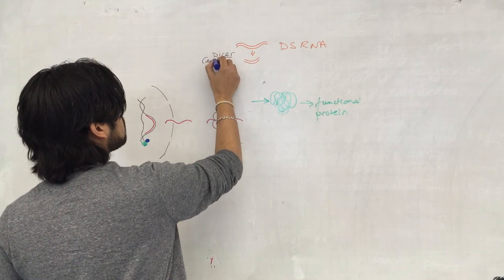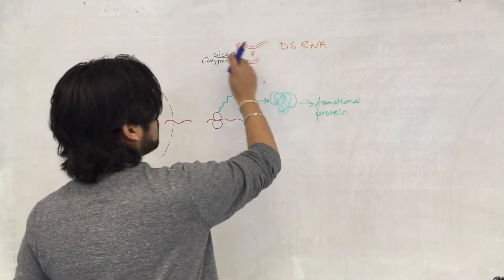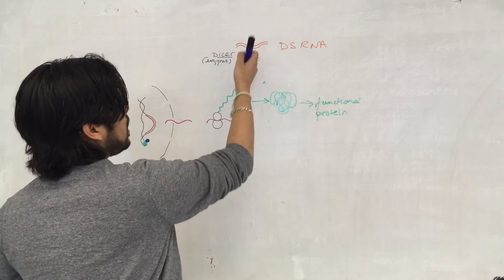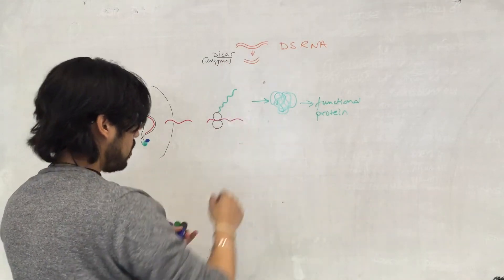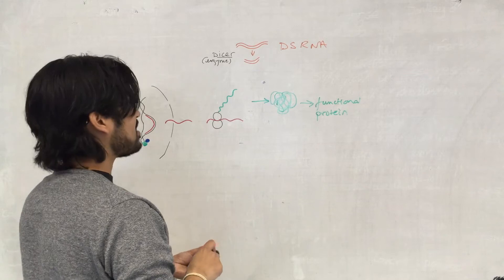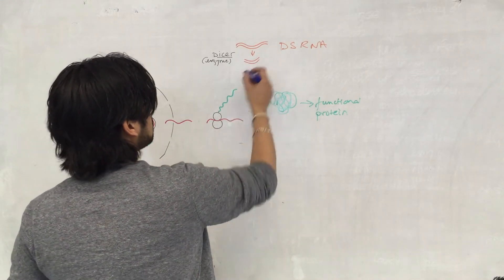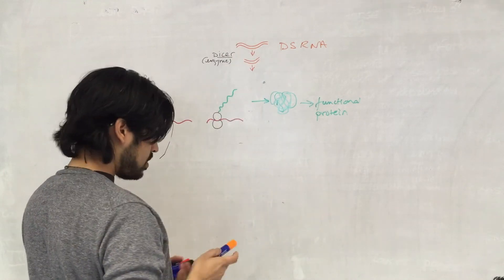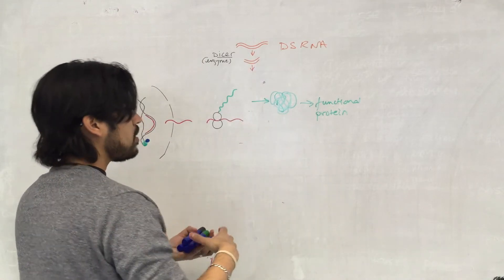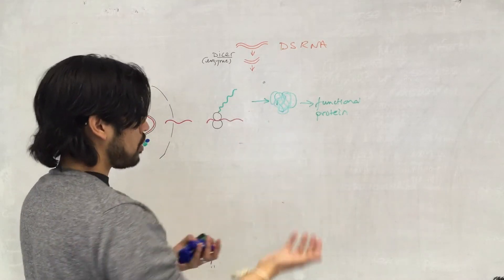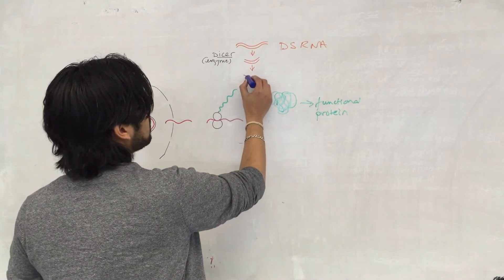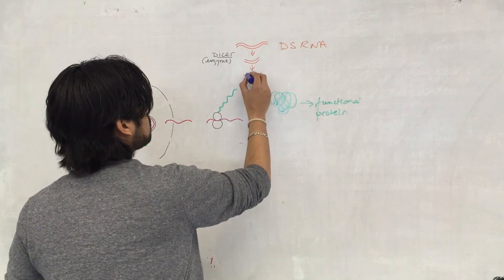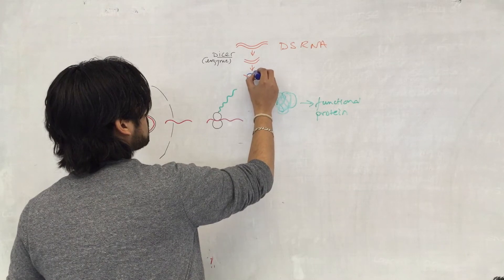DICER is an enzyme that chops up the original larger double-stranded RNA molecule into a smaller double-stranded RNA molecule. This smaller fragment then gets further processed by other proteins in the cell. One of the two strands of RNA gets degraded, and the remaining strand then forms a complex with other proteins in the cell.